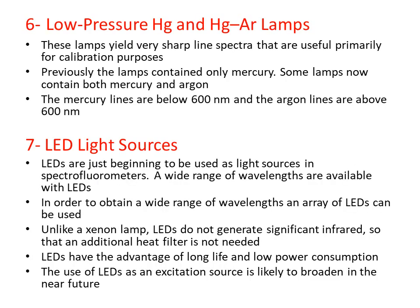Another light source is low pressure mercury and mercury-argon lamps. These lamps yield very sharp line spectra that are useful primarily for calibration purposes. Previously, lamps contained only mercury, but now some contain both mercury and argon. Mercury produces lines below 600 nanometers, while argon produces lines above 600 nanometers.